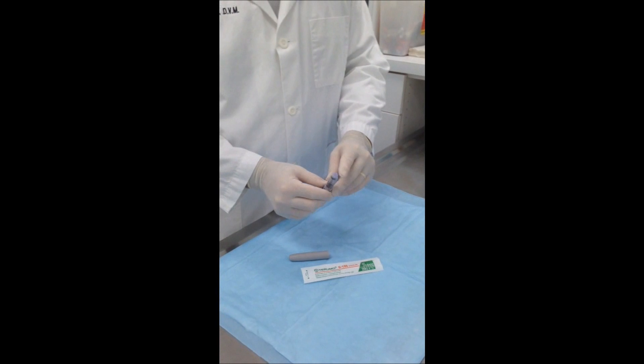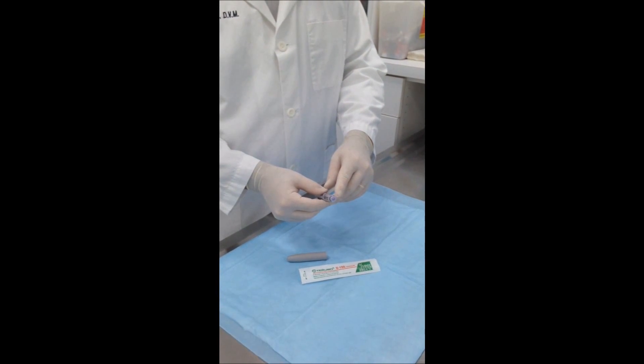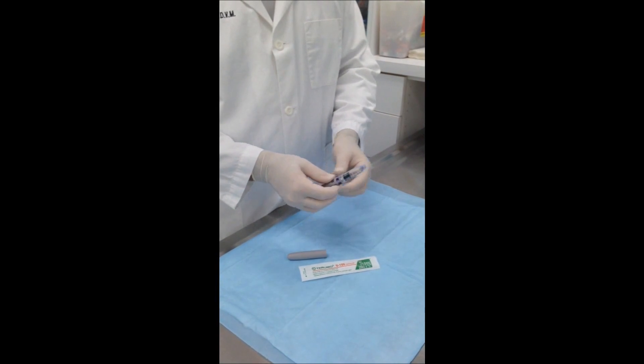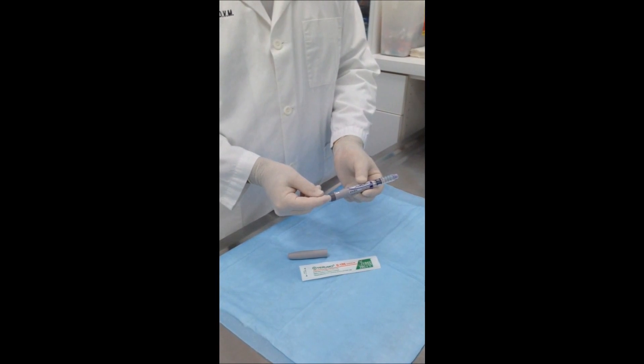There is essentially a rubber stopper at the end of the Lantus pen that's intended for attaching disposable needles which then the people would use to administer the insulin to themselves.